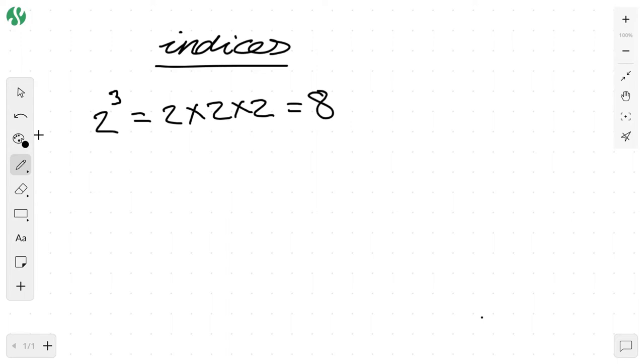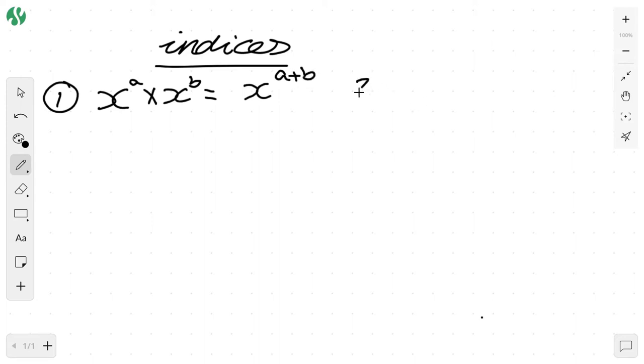So what are the rules of indices and how can we apply this to a past paper question? Rule number one: we take x, our variable, and put it to the power of a, and we times it to x to the power of b. The answer is going to be x to the power of a plus b. So for example, 2 to the power of 2 times 2 to the power of 3 is going to equal 2 to the power of 5.